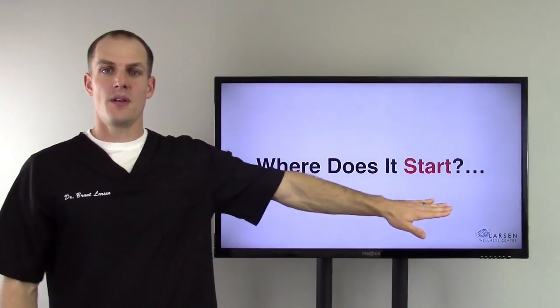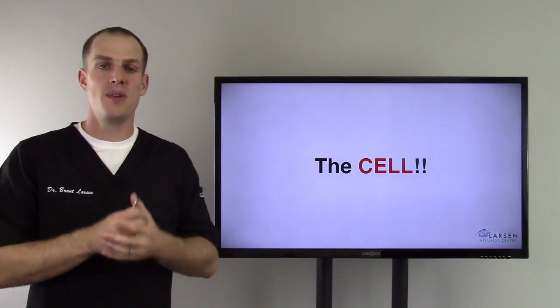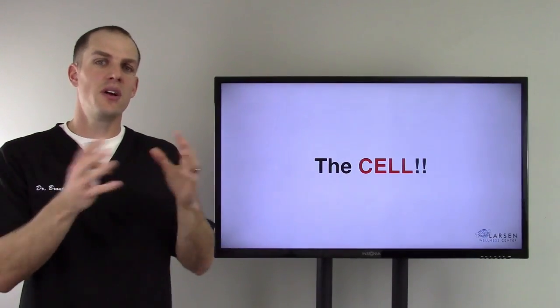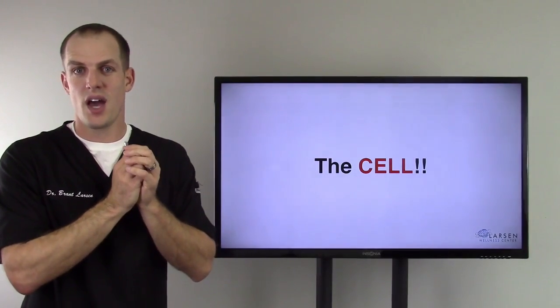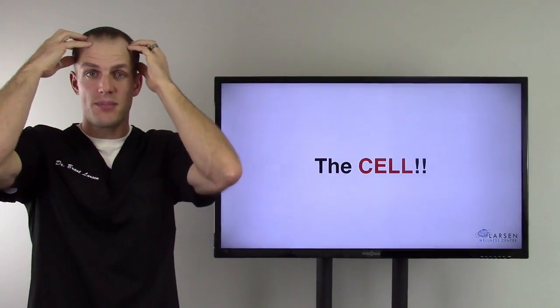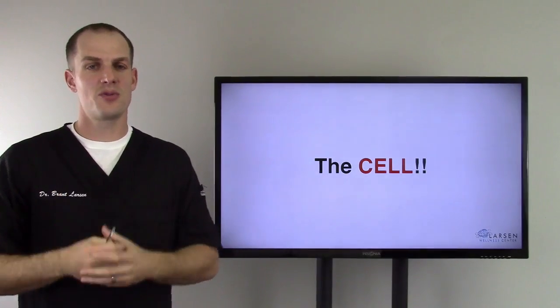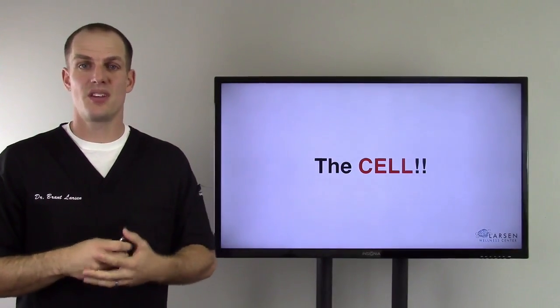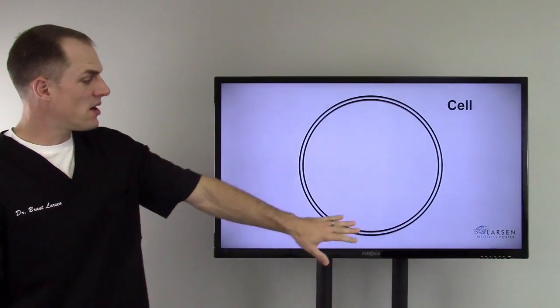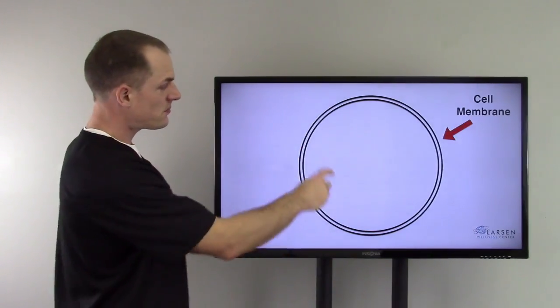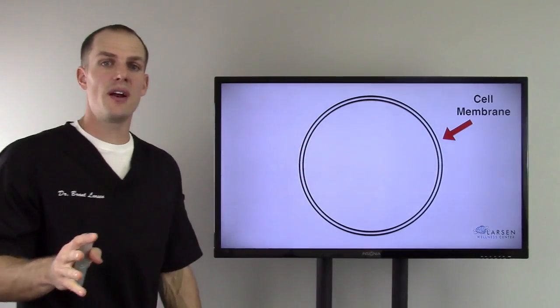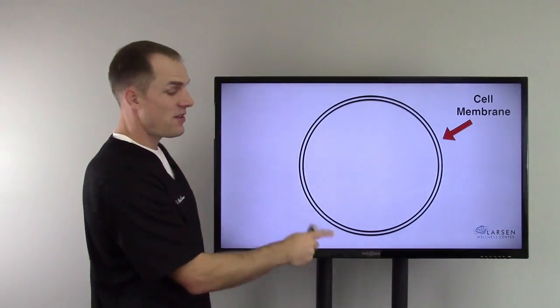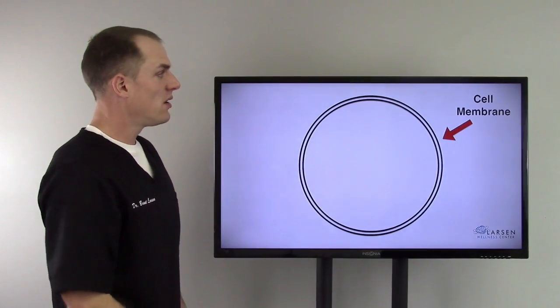Now, where does it all start? It starts in the cell. And this is where the rubber really meets the road. Our bodies are made up of trillions of different cells. And these trillions of different cells organize into organs. So we have cells that make up the liver. We have cells that make up the brain. Cells that make up the heart. But it all starts with cells. And that is where the key and the magic really lies to solving a lot of life's problems and health disorders today.